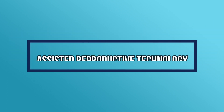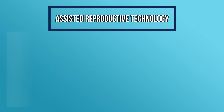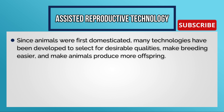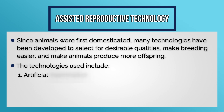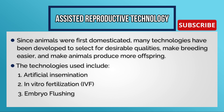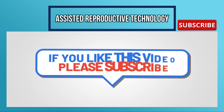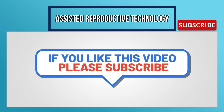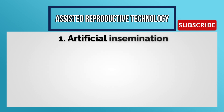Next is assisted reproductive technology. Since animals were first domesticated, many technologies have been developed to select for desirable qualities, making breeding easier and making animals produce more offspring. The technologies used include artificial insemination, in vitro fertilization (IVF), embryo flushing, and cloning. Many of these technologies involve the manipulation of animal reproduction.